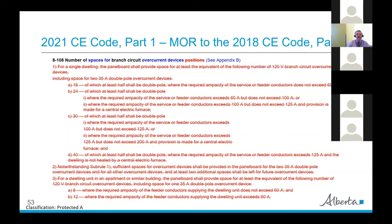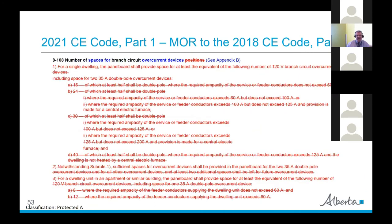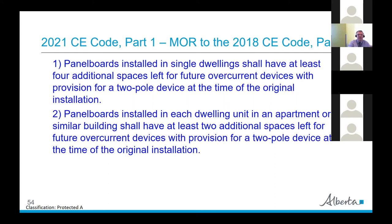In Section 8, there's a change on the number of spaces for branch circuit overcurrent devices. It used to say 'number of branch circuit positions' but now it's 'number of spaces for branch circuit overcurrent devices.' Two new rules: panel boards installed in single dwellings shall have at least four additional spaces left for future overcurrent devices with provision for a two-pole device at original installation; panel boards in each dwelling unit in an apartment or similar building shall have at least two additional spaces for future overcurrent devices with provision for a two-pole device.